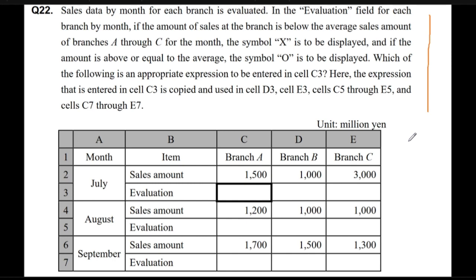It says here that we have this rule: if the amount of sales is below the average sales amount of branches A to C for the month, we write the symbol X, otherwise we write the symbol O.